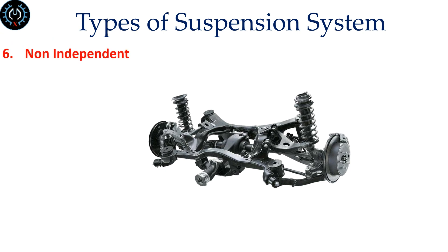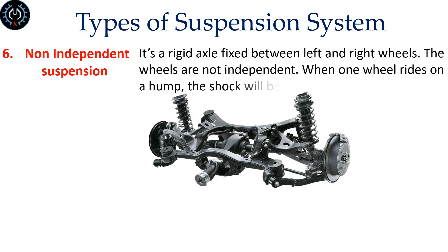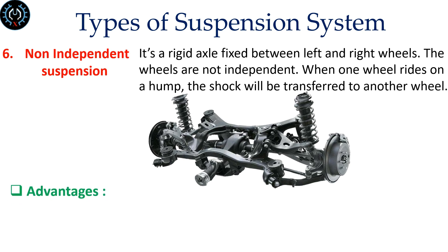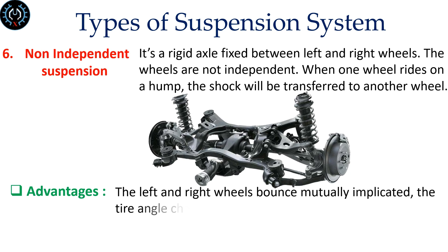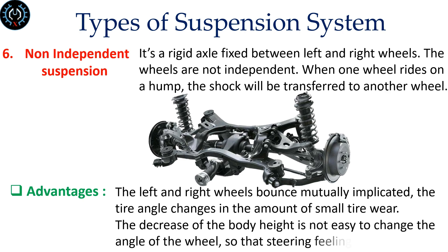Non-independent suspension is a rigid axle fixed between left and right wheels. The wheels are not independent — when one wheel rides over a hump, the shock will be transferred to the other wheel, and the left and right wheels bounce in a mutually connected manner. The tire angle changes minimally, and the steering feeling remains consistent.